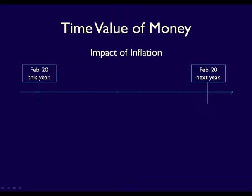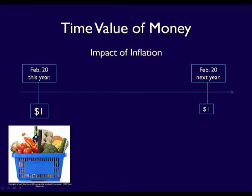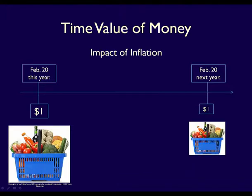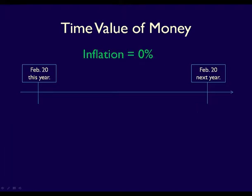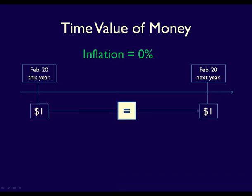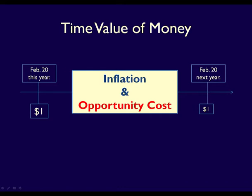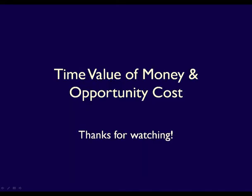So, if inflation causes prices to rise over time, it means that if you have a choice between a dollar today and a dollar tomorrow, you should definitely take the dollar today. Why? Because the basket of goods you can buy with your dollar today is a lot bigger than the basket of goods you will be able to buy with that same dollar tomorrow — the buying power of your dollar tomorrow is lower due to inflation. What if inflation was always 0%? Even if inflation were zero, which is very unlikely, a dollar today would still be worth more than a dollar tomorrow. Why? Because of the opportunity cost, which we'll discuss in a future video.